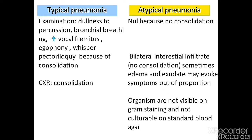Distinguishing examination features: typical pneumonia gives us findings on examination — dullness to percussion, bronchial breathing, increased vocal fremitus, egophony, and whispered pectoriloquy — all because of consolidation. Atypical pneumonia does not give these findings. Dullness to percussion occurs because consolidation replaces air; air is hyperresonant, but solid consolidation gives dullness.